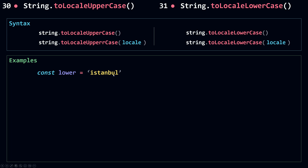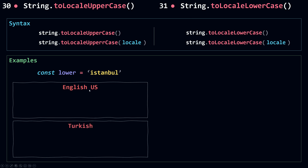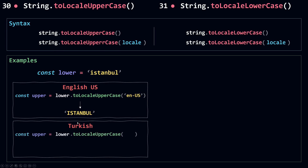Let's see some examples. I have here a string 'Istanbul' assigned to a variable. We'll look at the results using different locales: English US and Turkish. If I call toLocaleUpperCase with English US as the locale, I get 'ISTANBUL' in uppercase — that's expected. But with Turkish, because Turkish and some other languages have case mappings different from the default Unicode mappings, I get 'ISTANBUL' where the uppercase I has a dot at the top. So we get different results using different locales.